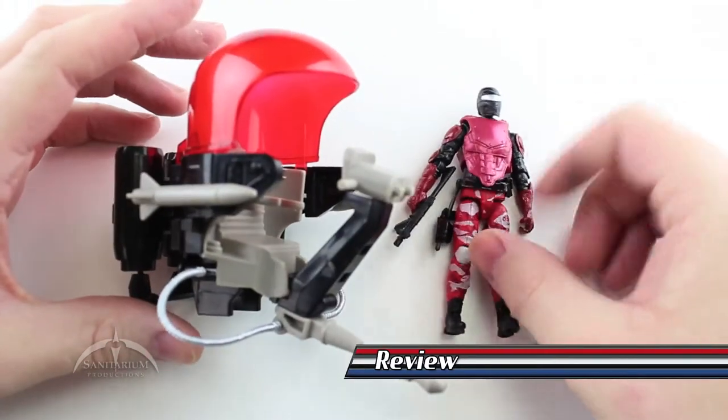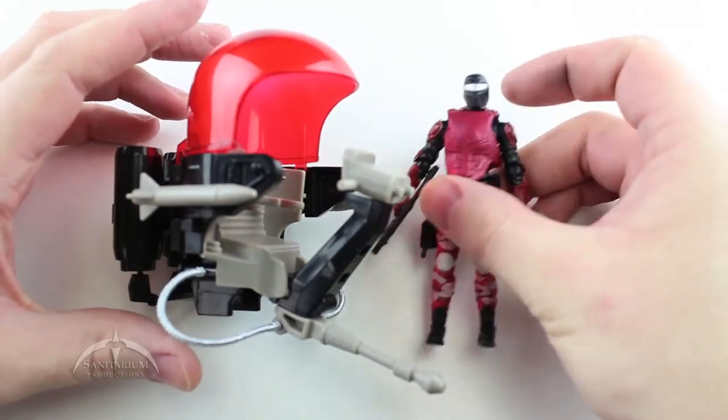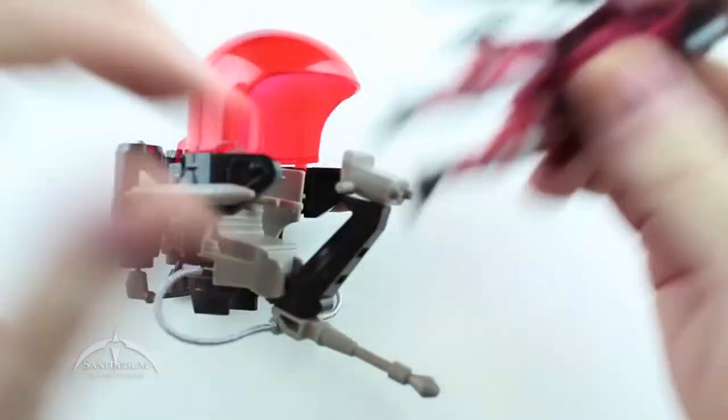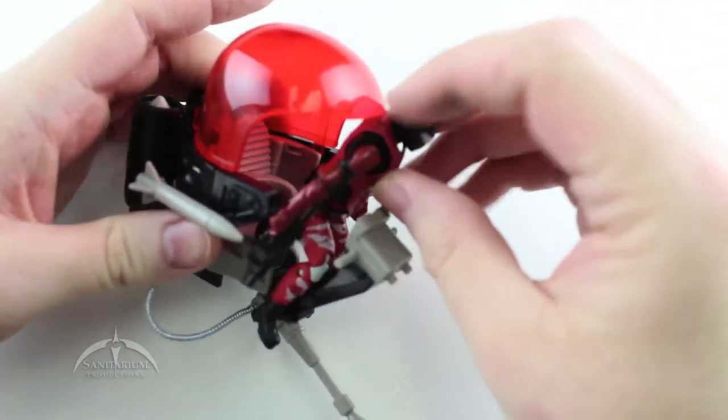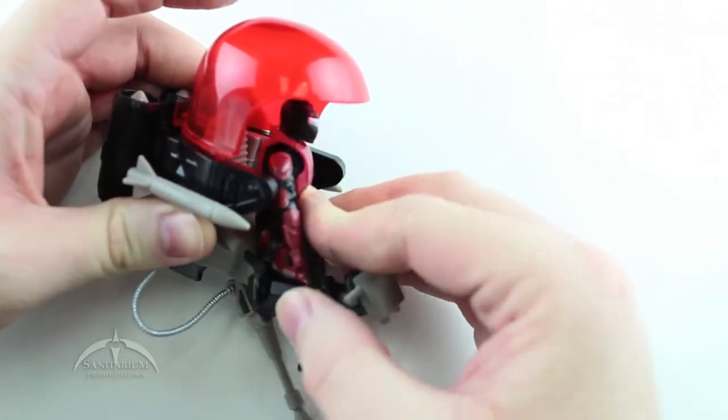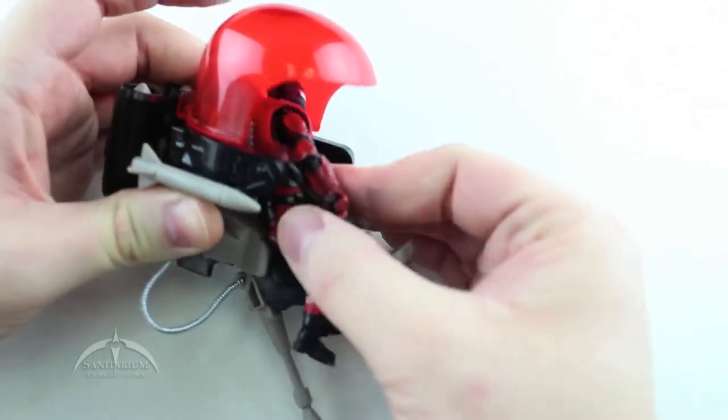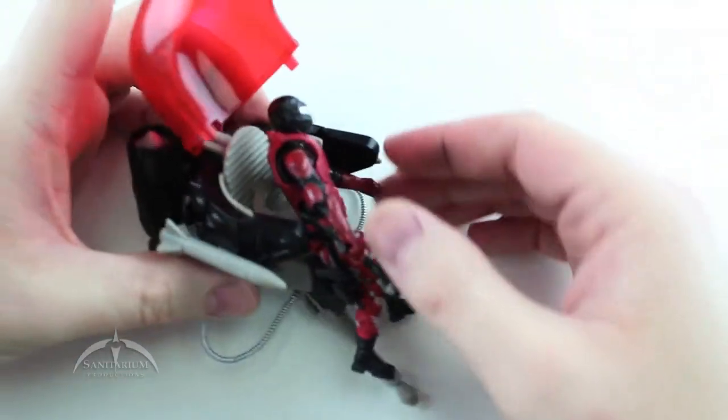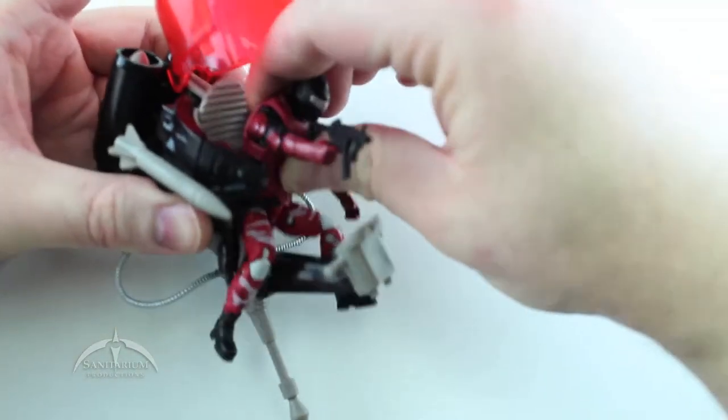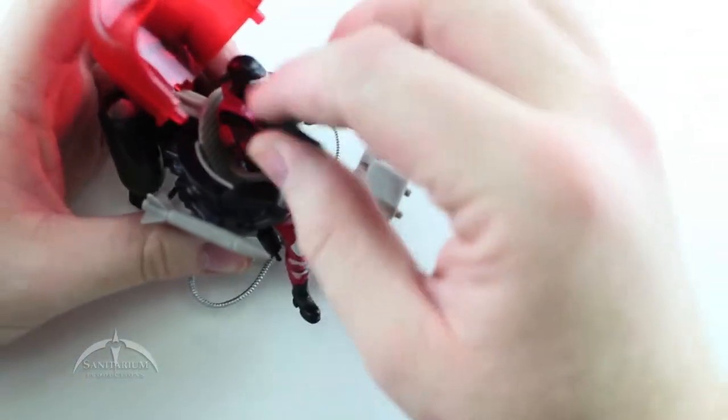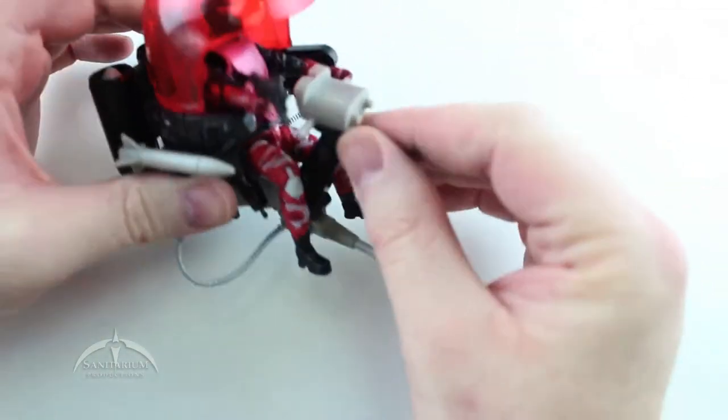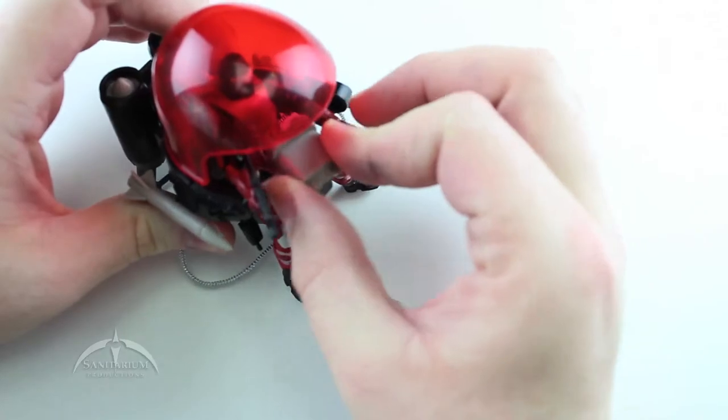Size comparison wise, the actual Cobra Flight Pod is about the size of my hand with a three and three quarter inch figure or four inch figure depending on how you look at it right beside it. To fit him in here you basically just bend his legs and push back on him until he clicks into place in that little seat belt harness thing around his waist.